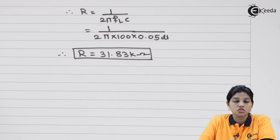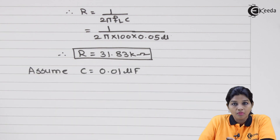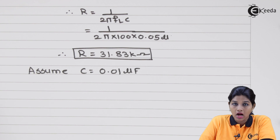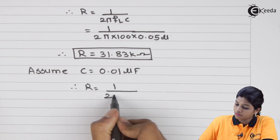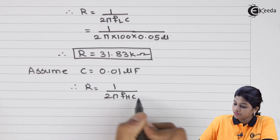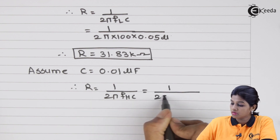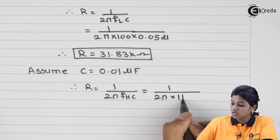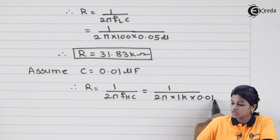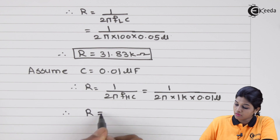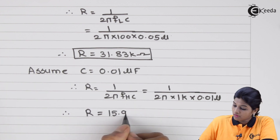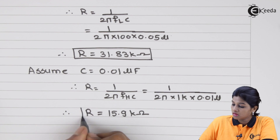Next, to design the low pass filter, assume the value of capacitor as 0.01 microfarad. With this value and fh, we calculate R-dash equals 1 upon (2π × fh × C-dash), which equals 1 upon (2π × 1 kHz × 0.01 μF). Therefore R-dash equals 15.9 kilo ohms.